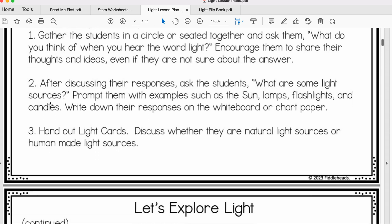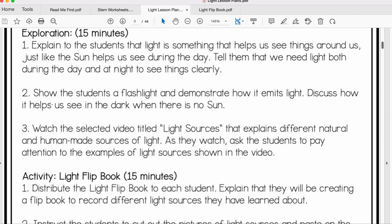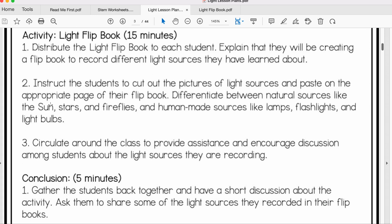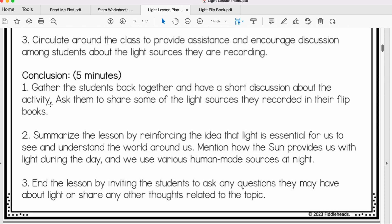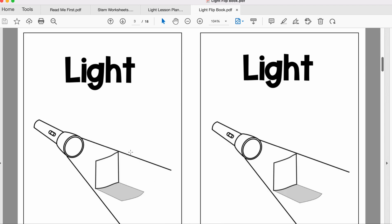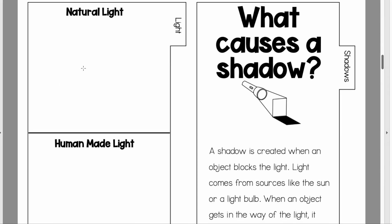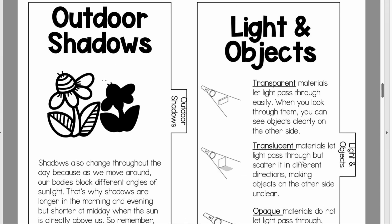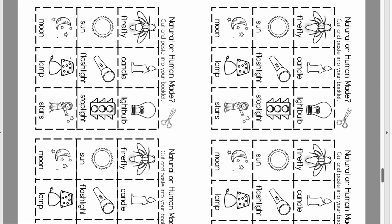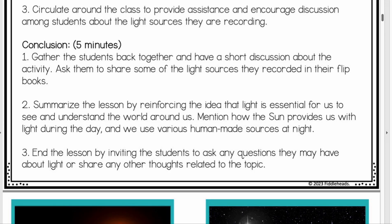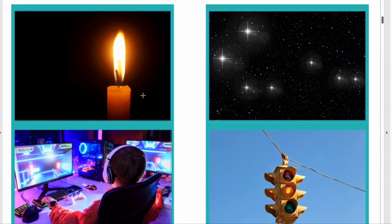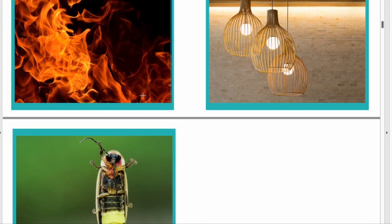On the first day we do an introduction. We have some light cards — students explore those and then we go into the flip book that goes along with the activity. In the flip book, students cut and paste things that are natural light and human-made light. They cut out those images and paste them back onto that page. We also go through all of the cards discussing whether something is man-made or a natural source of light.